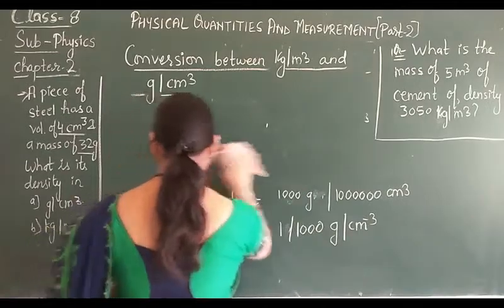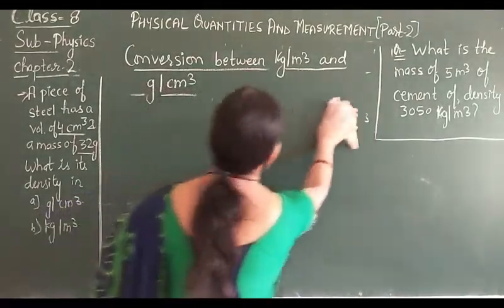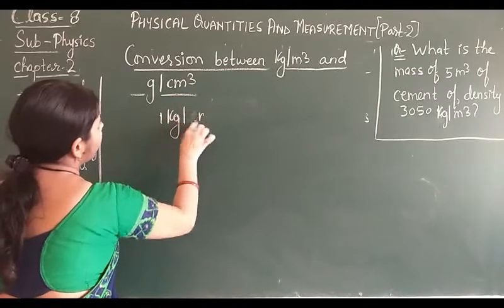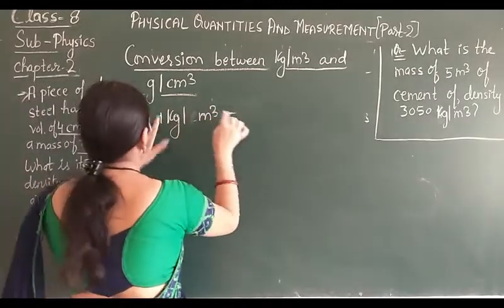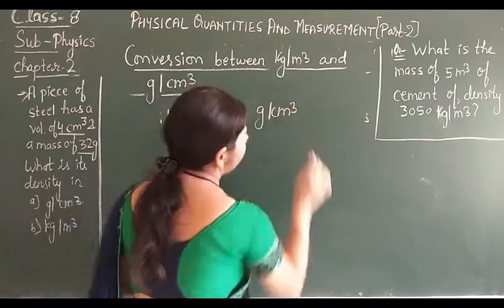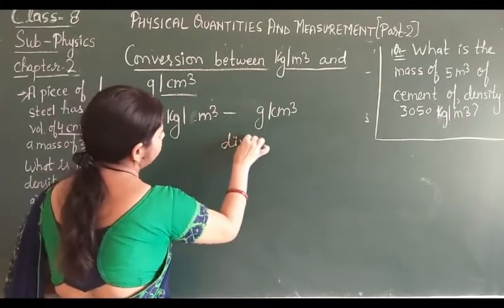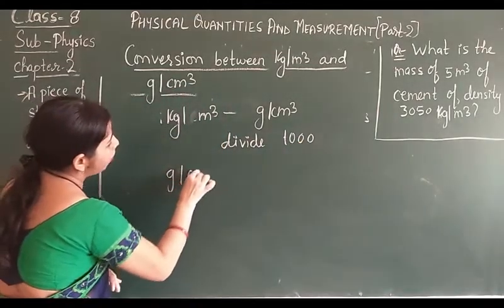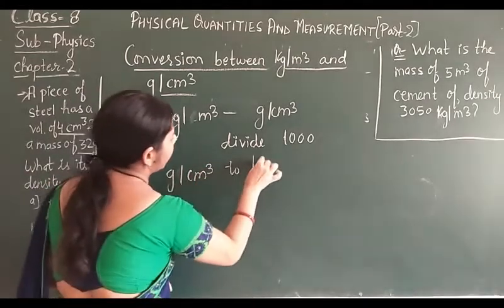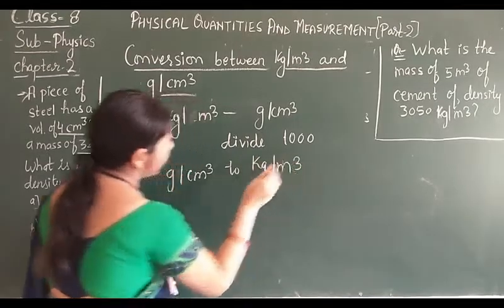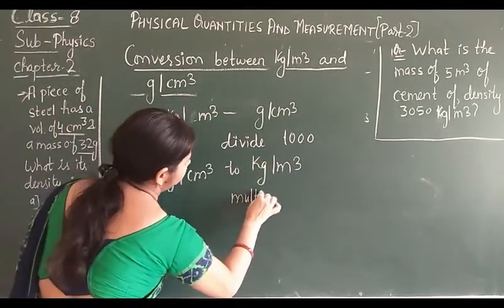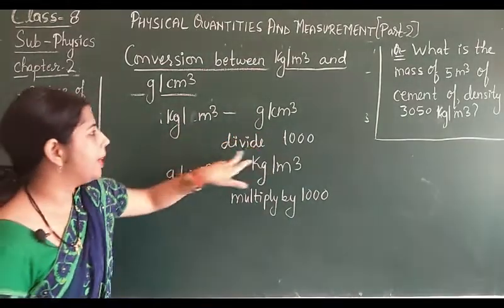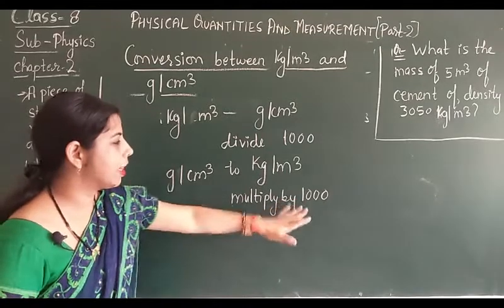So one important rule: if we want to convert 1 kilogram per cubic meter to gram per cubic centimeter, we divide by 1000. And if we want to convert 1 gram per cubic centimeter to kilogram per cubic meter, then we multiply by 1000.